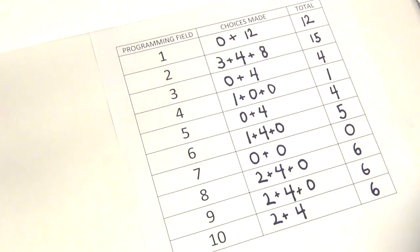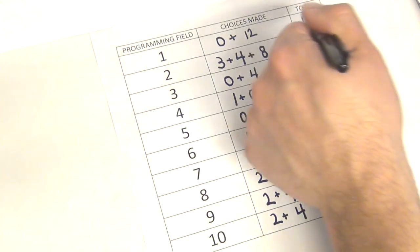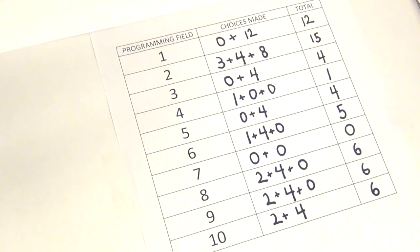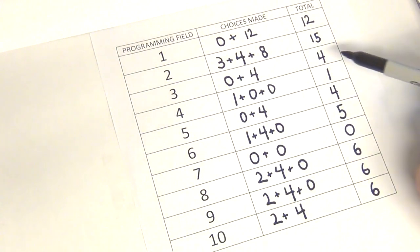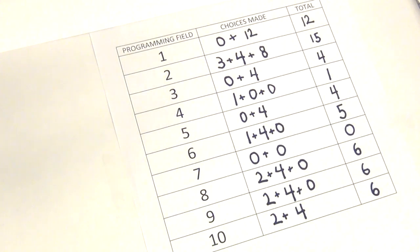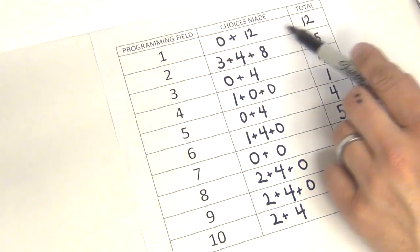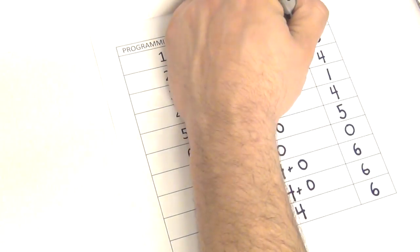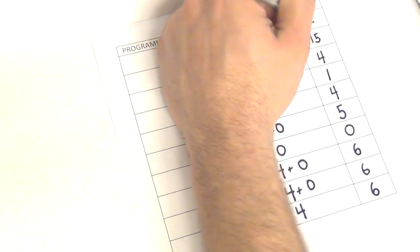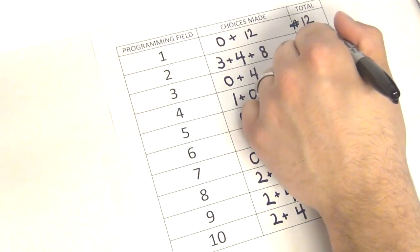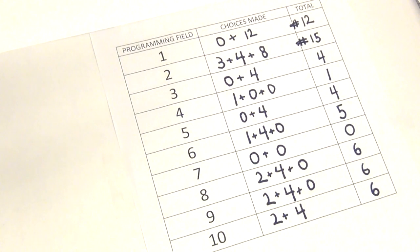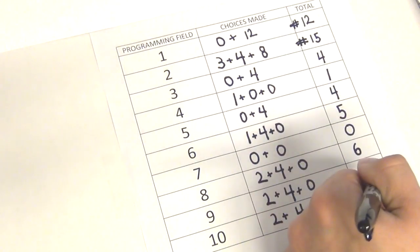Looking at our spreadsheet, our total column contains the numbers we're going to use when we actually go into Star 182 to do the programming. There is one other tidbit: the system needs to know if you're entering a two-digit or a one-digit number. The system deciphers this by prefixing a two-digit number with the pound sign. Fields one and two are both two-digit numbers, so we add a pound sign — giving us pound-12 for field one and pound-15 for field two. The rest of the numbers are single digits and need no prefix.